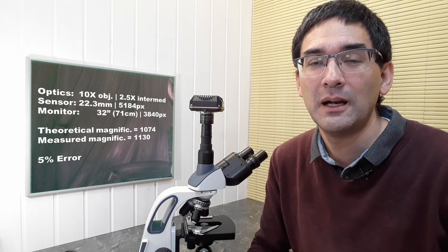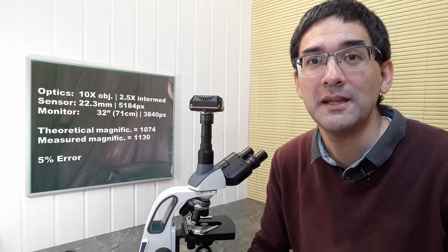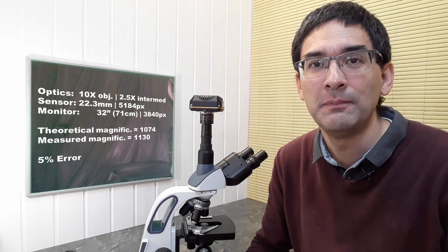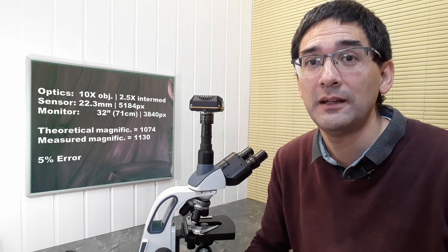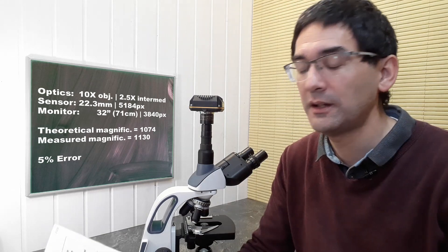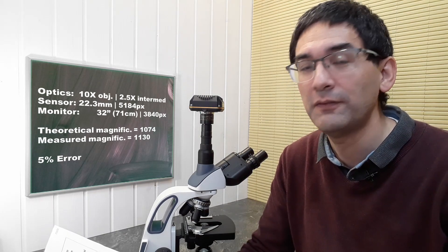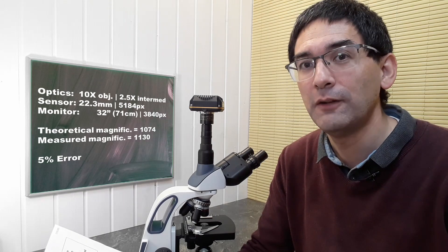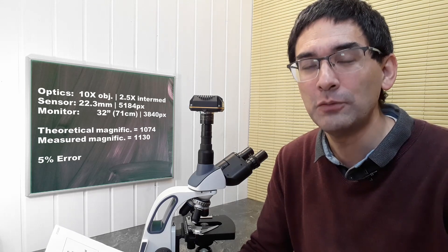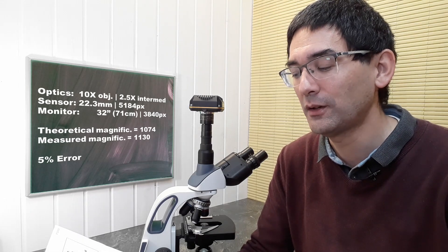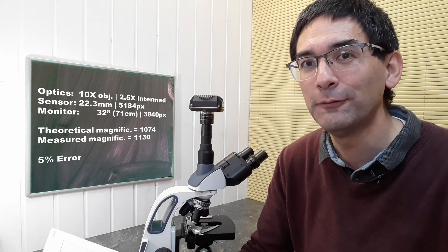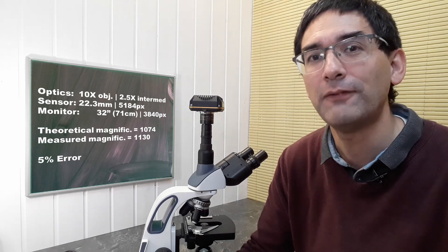I've used my own system with a DSLR camera and photo projection eyepiece. I've done the whole calculation and used a micrometer slide, then compared those two values. Here is the data of my system: I got a theoretical magnification of 1074 times using a 10 times objective, and the measured magnification using a micrometer slide is 1130. I calculated the difference and the percent error, which is about 5% - that's okay.